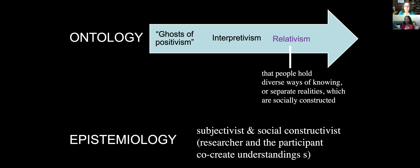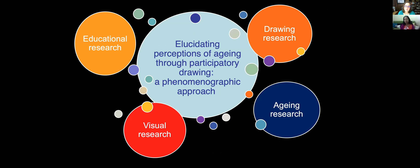Epistemologically, this is much more around social constructionist learning — that researchers and participants co-create understandings. I realized not everybody will agree with that, and I'm absolutely fine. As an aside, in my pharmacology degree I extracted rat muscle and tested the effects of different chemicals — that was very clear cut and was not relativism. So there are different positions. Do we need different approaches to study different things? Exactly. And a lot of aging studies are very positivistic, looking at correlations. This isn't one of those.